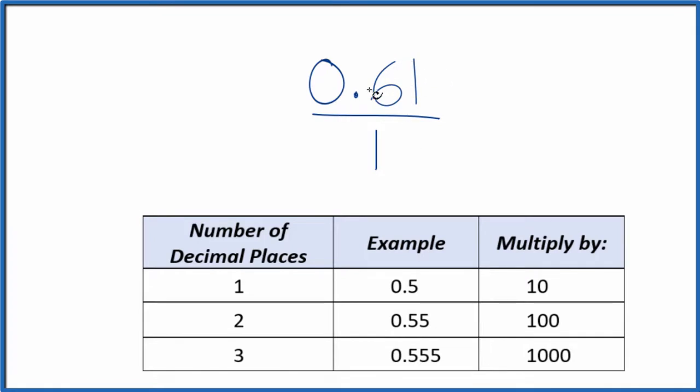Next, we need to get this 0.61 to a whole number. I can see we have two decimal places. We're going to multiply the numerator here by 100. So 100 times 0.61, that gives us 61. And that's a whole number, so that's what we needed.